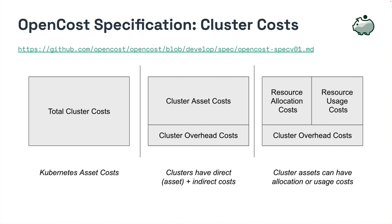The OpenCost spec measures and allocates infrastructure and container costs in Kubernetes environments. We start with shared definitions. Total cluster costs are everything associated with our Kubernetes deployment, which breaks down into direct and indirect costs. Indirect costs are cluster overhead costs, measuring the overhead required to operate all of the assets for a cluster—for example, the cluster management fees you might see in your AWS or Azure bills. Direct costs further break down by allocation and usage: allocation costs generally have an hourly rate, and usage costs are by the amount consumed—examples include storage, jobs, and number of units processed.